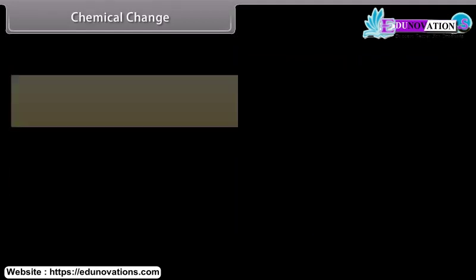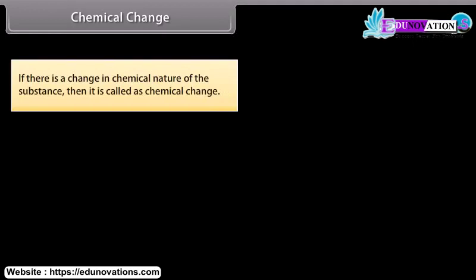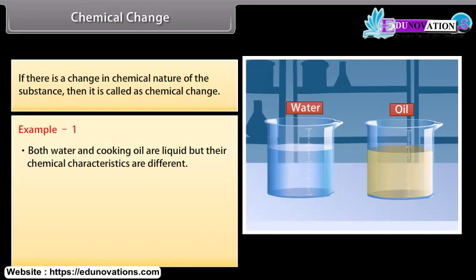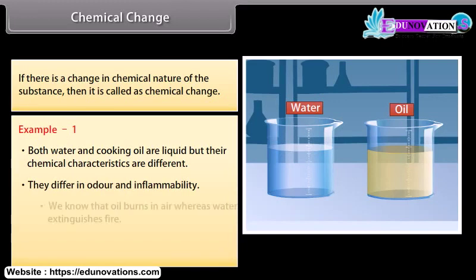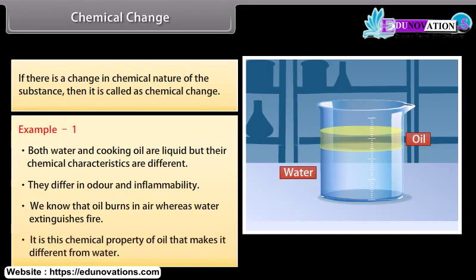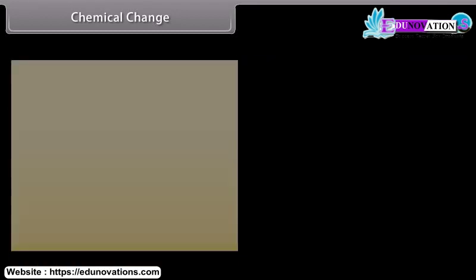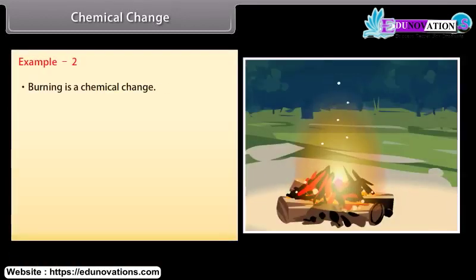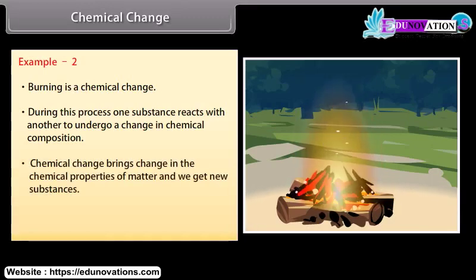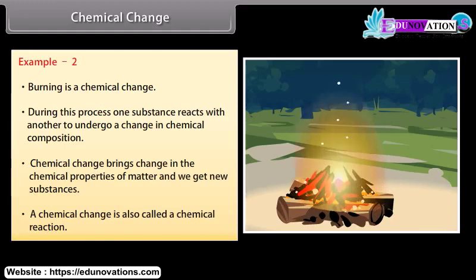If there is a change in the chemical nature of the substance, then it is called a chemical change. Example 1: Both water and cooking oil are liquids, but their chemical characteristics are different — they differ in odor and inflammability. Oil burns in air whereas water extinguishes fire; it is the chemical property of oil that makes it different from water. Example 2: Burning is a chemical change — one substance reacts with another to undergo a change in chemical composition. A chemical change brings change in the chemical properties of matter and we get new substances. A chemical change is also called a chemical reaction.